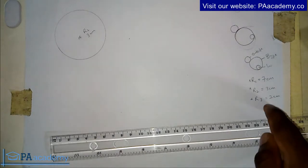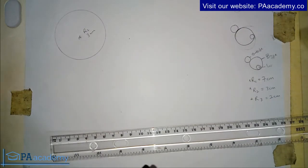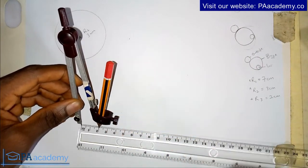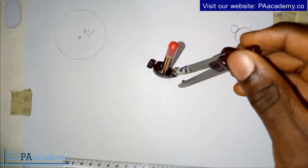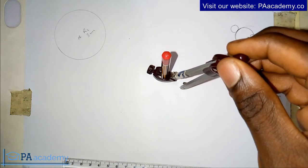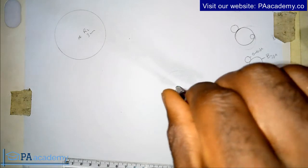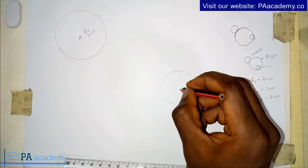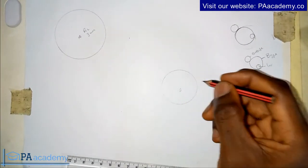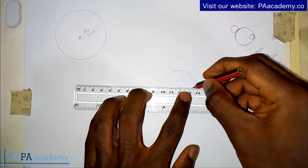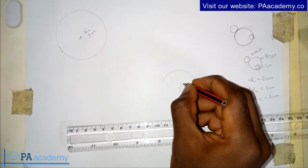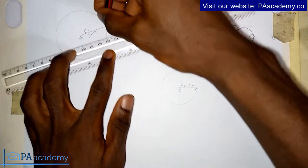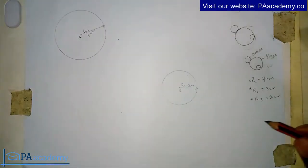Now let's draw the R3 circle with a radius of two centimeters. I pick my compass and measure two centimeters. I place it somewhere here and draw the circle. Let me call the center of this circle point B. The radius here is R3, which is two centimeters. So the radius of the first circle is three centimeters and the radius of this one is two centimeters.